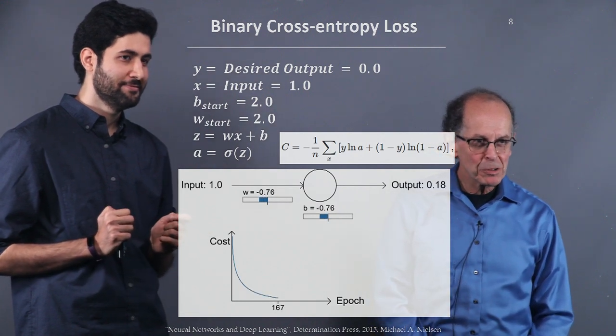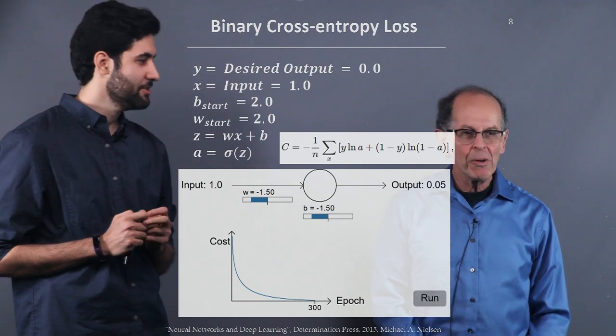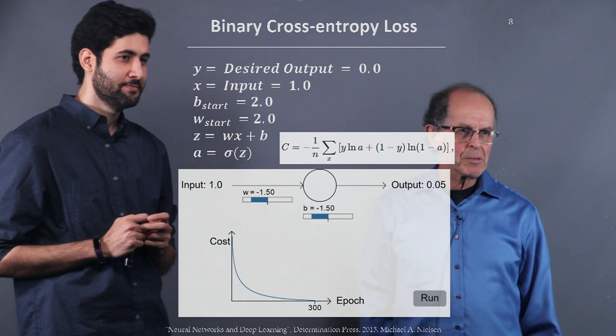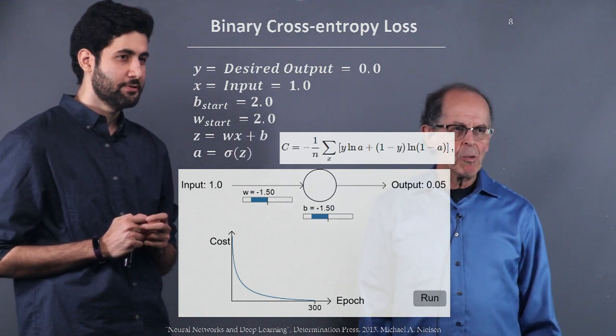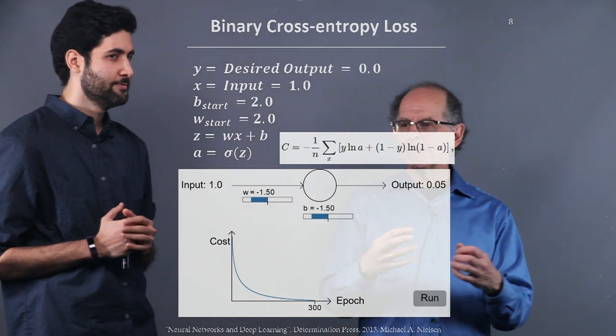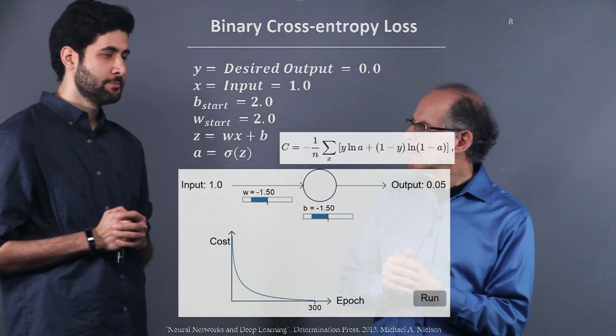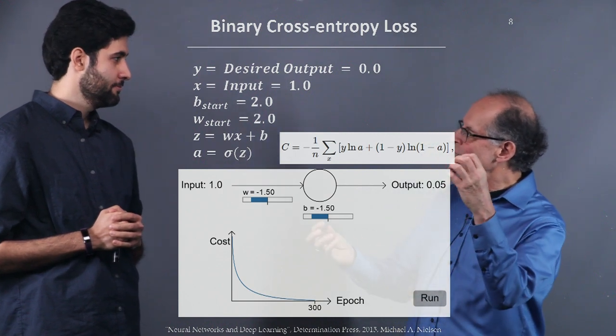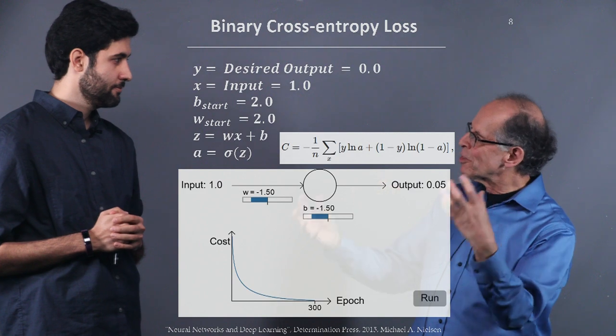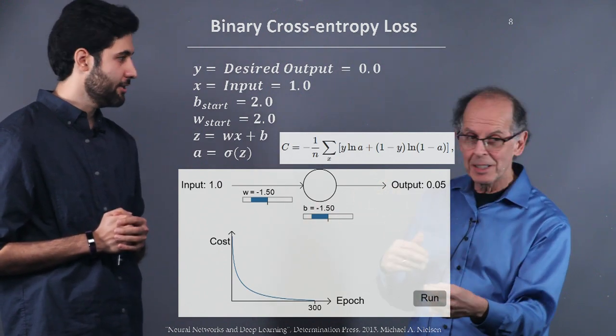Holy smokes. Look at that. Yeah. 0.05. Almost the same. And I think also we ran it 300 iterations. Wow. So, this is a kind of cost function we want to use in which situation? Because it sounds like it's a binary situation. So, it's going to be used for a classification. Binary classification. Exactly. That's right.